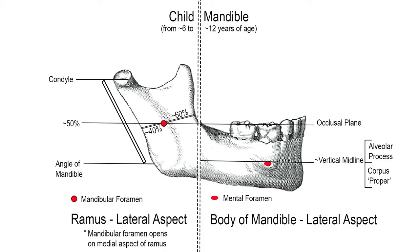As a result of the upwards and backwards growth of the ramus, with the subsequent downwards and forwards growth of the body of the mandible, during the course of mixed dentition — approximately ages 6 to 12 — the mandibular foramen will have shifted from the level of the occlusal plane, midway between the mandibular angle and the condyle, just under two-thirds distance from the coronoid notch to the posterior border of the ramus. Therefore, injections will need to be given at this level.